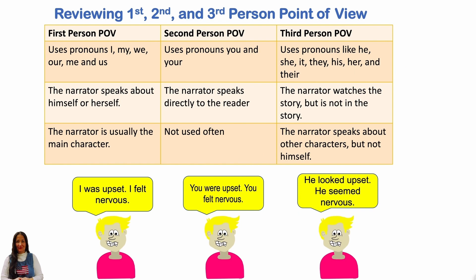Reviewing first, second, and third person point of view. First person point of view uses pronouns I, my, we, me, and us. The narrator speaks about himself or herself. The narrator is usually the main character. In second person point of view, uses pronouns you and yours. The narrator speaks directly to the reader. This is not used often — for example: 'You were upset. You felt nervous.' Third person point of view uses pronouns like he, she, it, they, his, her, and their. The narrator watches the story but is not in the story. The narrator speaks about other characters, but not himself — for example: 'He looked upset. He seemed nervous.'